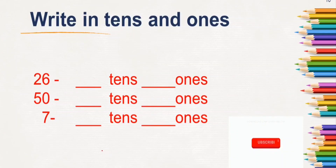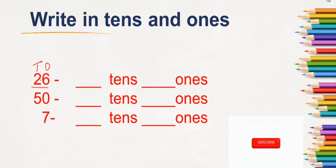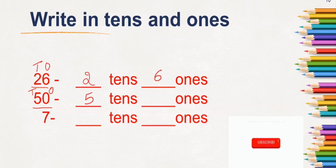Next, write the numbers in 10s and 1s. The numbers are 26, 50, and 7. In 26, there are 2 tens and 6 ones. In 50, there are 5 tens and 0 ones. In 7, it's only a ones digit — there are no tens here. So at the tens place we write 0 and at the ones place we write 7.